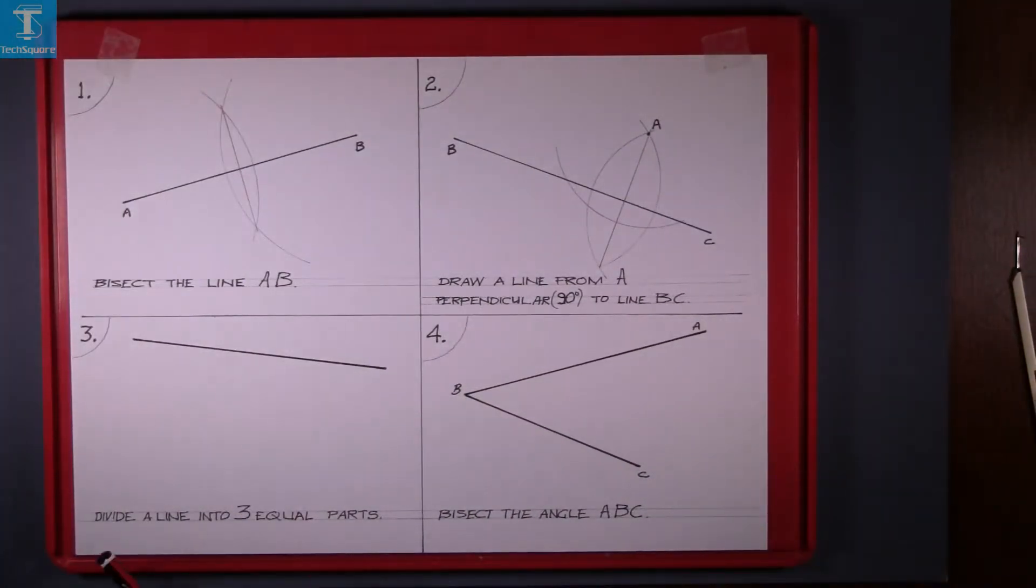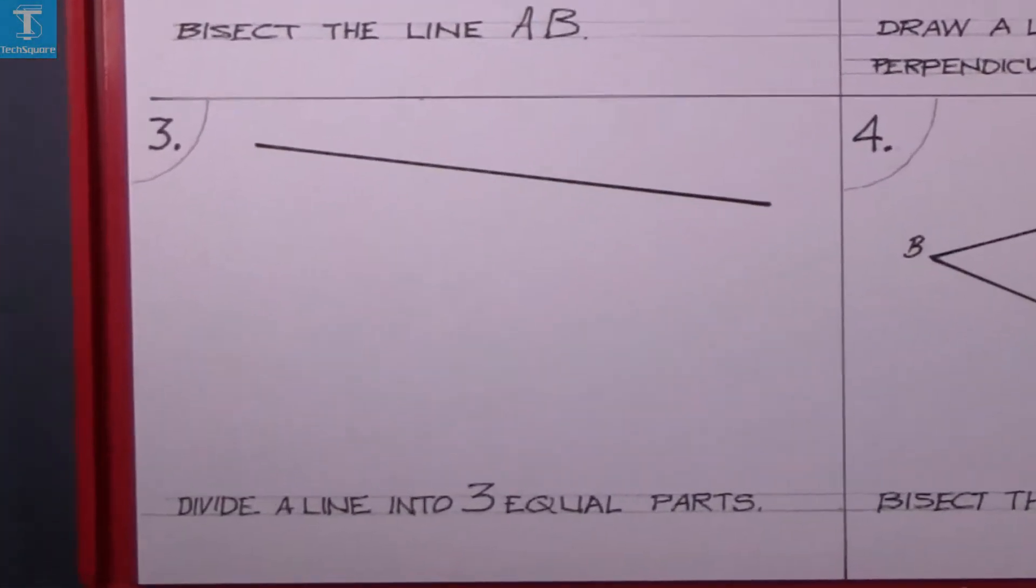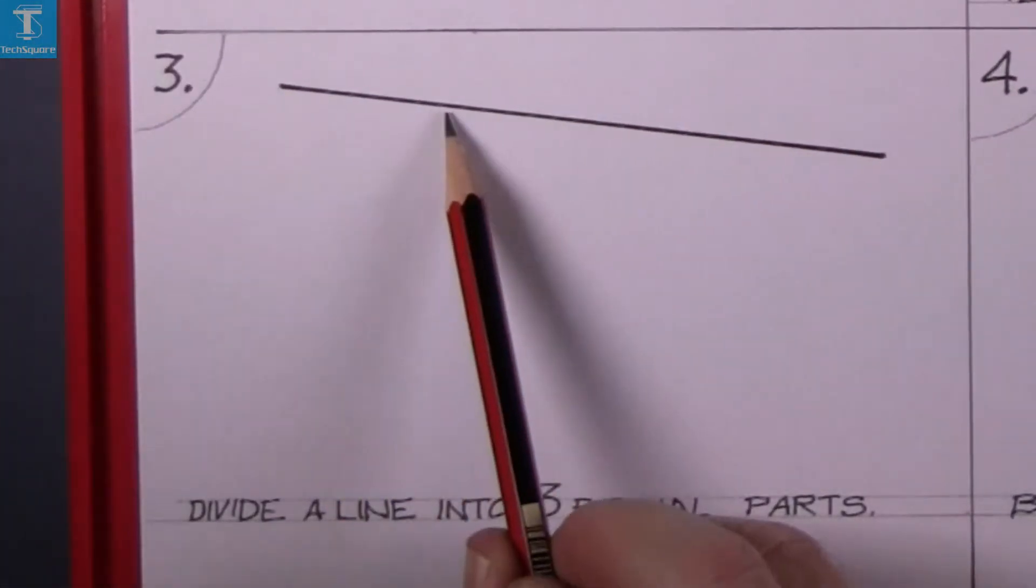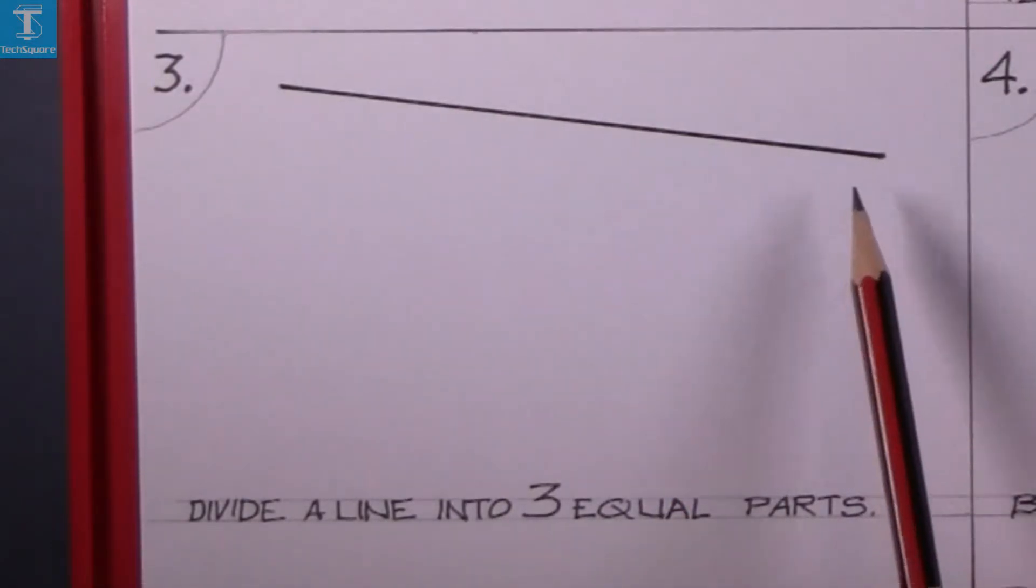Question 3. Divide the line into three equal parts. So we have to find three parts in the line altogether.